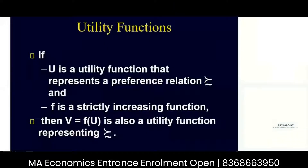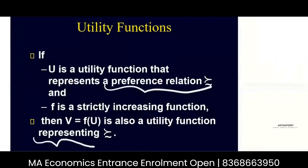Based on the examples that we have done, I want to talk about this theorem. If u is a utility function that represents the preference relation 'as good as,' and f is a strictly increasing function, then v, which is a function of u, is also a utility function representing the same preferences.